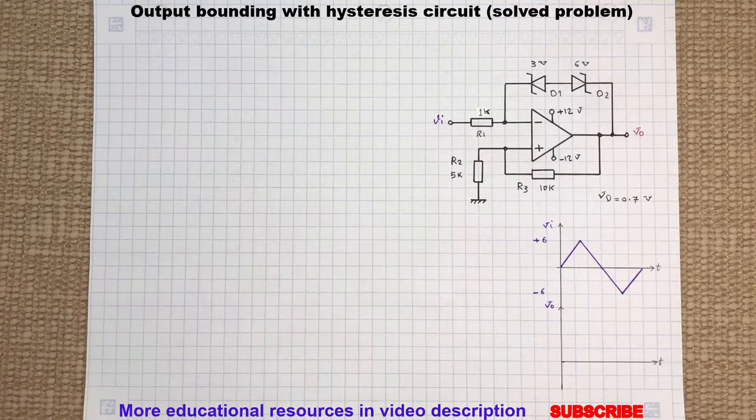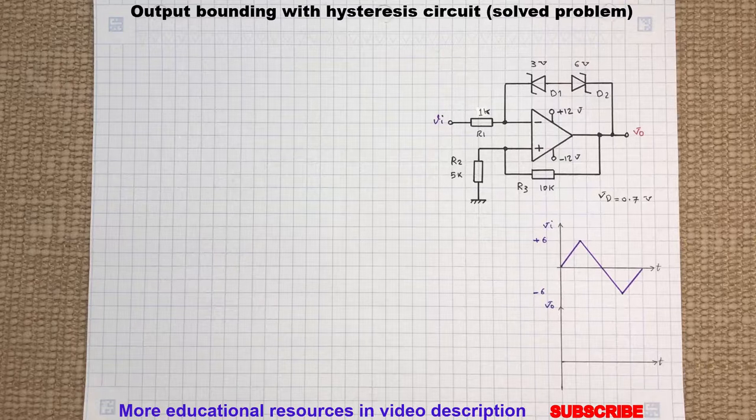Today we are going to find the output voltage levels of this Schmitt trigger circuit and determine the upper and lower trigger points.